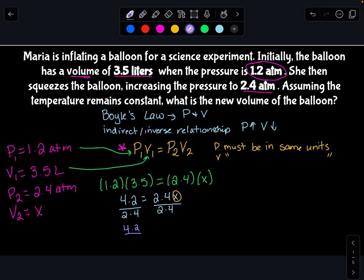4.2 divided by 2.4 equals x because 2.4 divided by 2.4 is 1. And now we just do the math, right?